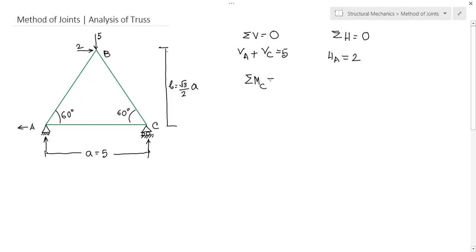Let us take a moment about C. So it will be VA moment in clockwise direction, VA into distance is A minus, distance is A by 2, force is 5 into distance is A by 2. And for these two, moment in clockwise direction, so 2 times distance B equals to zero.